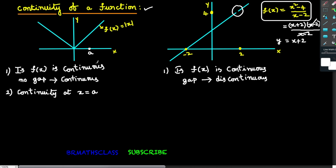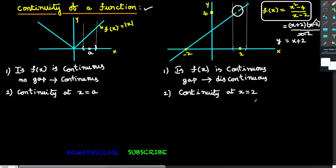Second point: how to check continuity at a particular point. To check continuity at x = a, observe the neighborhood of a. For the modulus function, in the neighborhood of a, is there any gap? No — so the function is continuous at x = a. For the second graph, to check continuity at x = 2, observe the neighborhood of 2. There is a gap in the neighborhood of 2, so the function is discontinuous at x = 2.